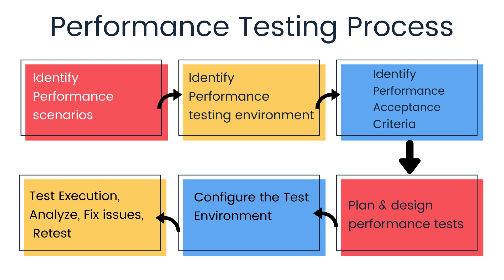The seventh step is test execution, where we execute and monitor the tests. The final step is to analyze, fix issues, and retest. After executing the test scripts, analyze the results. Bottlenecks could occur due to problems in code, hardware issues, network issues, or software issues. After fine-tuning, re-run the tests and check whether the results meet the required goal.